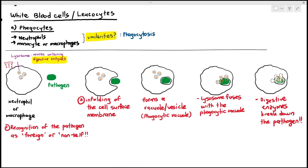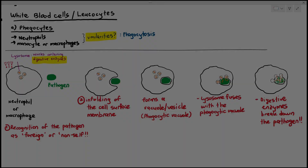In summary, neutrophils are short-lasting and macrophages are longer-lasting; neutrophils do not carry out antigen presentation whereas macrophages do, placing antigens on their cell surface membrane. However, both phagocytes share the similarity of carrying out phagocytosis. This is what we need to know about phagocytes in general.